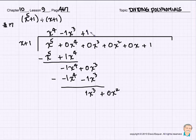Well, how are we going to get an x squared with an x? Well, we better multiply it times 1x squared. So 1x squared times x is 1x cubed. 1x squared times 1 is plus 1x squared.